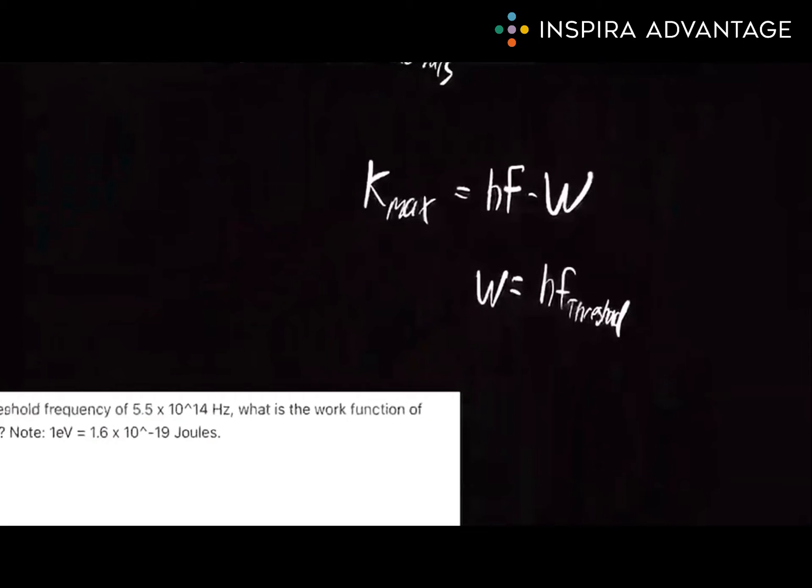Now let's talk about the maximum kinetic energy in the photoelectric effect. This can be calculated using the formula Kmax equals HF minus W, where W is the work function, which is the minimum energy required to eject an electron from a particular metal.